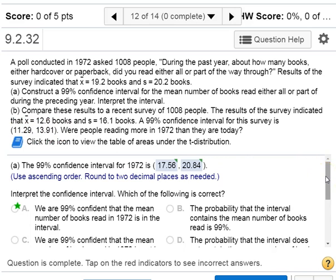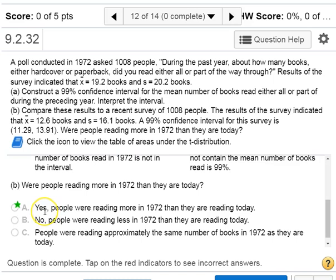So the way you would interpret that is we're 99% confident the mean number of books read today is in between these smaller values. So yes, it's okay to conclude that people were reading more back in 1972 than they are reading today.